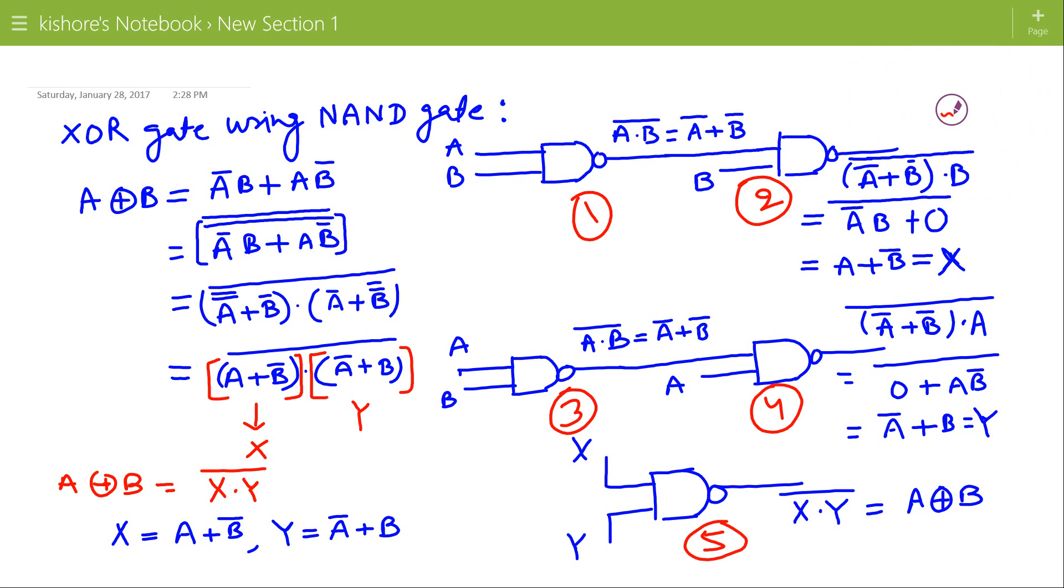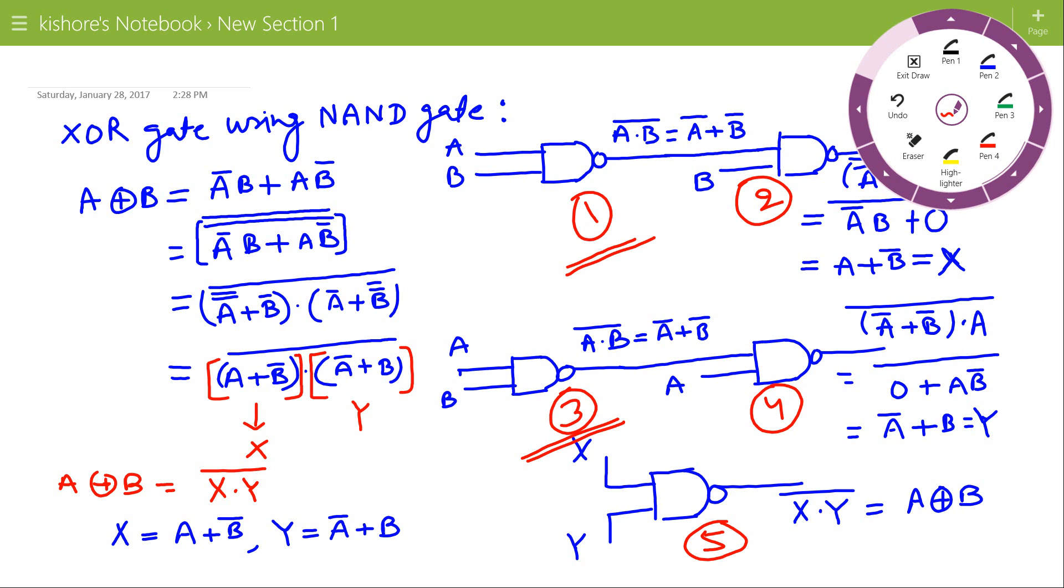So here we can see total 5 number of NAND gates. But overall we have to perform A NAND B only once. So 1st and 3rd NAND gates are common. So effectively we will have to use just 4 NAND gates.